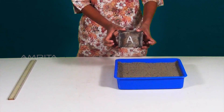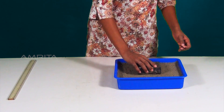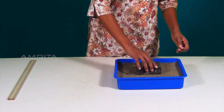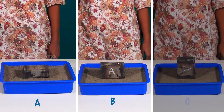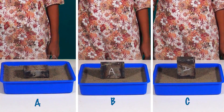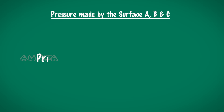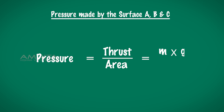Now, calculate the pressure made by surfaces A, B, and C using the formula: Pressure equals thrust divided by area, which equals M multiplied by G, divided by L multiplied by B.